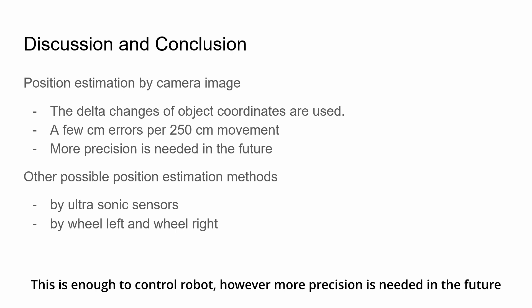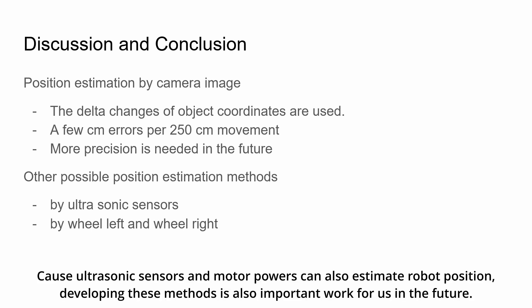However, more precision is needed in the future. Ultrasonic sensors and motor powers can also estimate the robot position. Developing this method is also important work for us in the future.